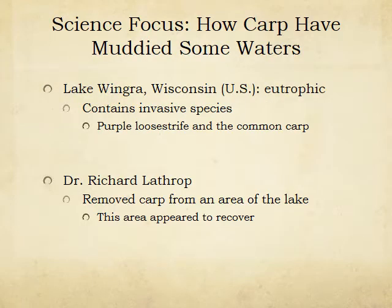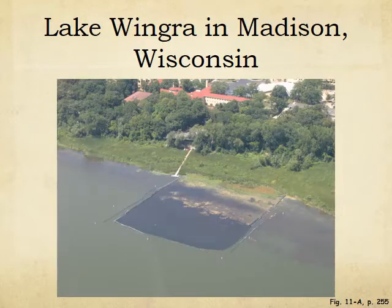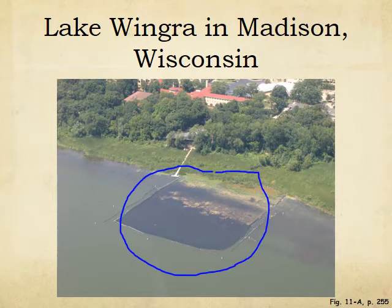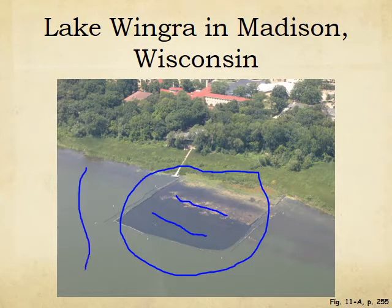This is a case study of how carp have muddied some waters. In Wisconsin, there's an invasive species of purple loosestrife, a plant, and the common carp has been introduced. Dr. Richard Lathrop removed carp from an area of the lake and that area seemed to recover. The carp caused lots of turbidity in the water, which affects the amount of sunlight getting through and the amount of photosynthesis that occurs. You can see the roped-off area is much more clear — you can actually see the bottom — compared to the area where carp were not removed. They literally muddy the water.